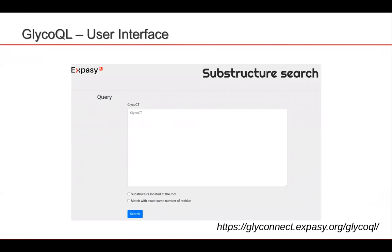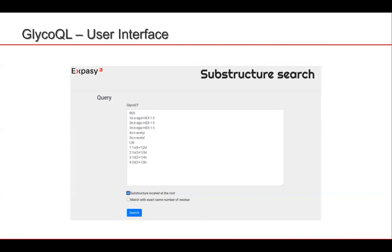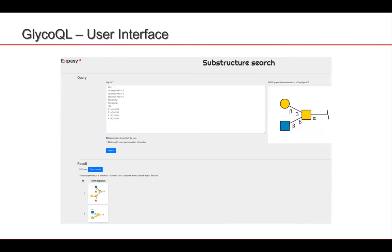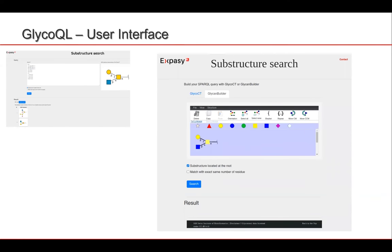If you have a substructure that isn't found in Octopus, we needed users to be able to search for it themselves, so we created a simple user interface where you can enter a GlycoCT string, choose a couple of flags, and press the search button. The display shows the cartoon of the structure you searched for as well as a list of structures found in GlyConnect. Coming soon, we'll have a drawer where you can actually draw the structure.